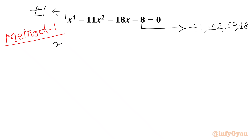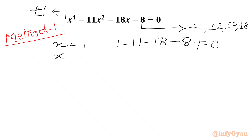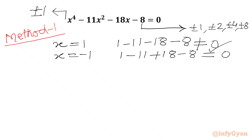In this series, if I plug in x = 1, will it satisfy our quartic equation? Let's check: 1 - 11 - 18 - 8. No, it won't. Let's plug in x = -1. So I will write here 1 - 11 + 18 - 8. This time it is satisfying our equation: 19 - 19 = 0. So we can conclude x = -1 is our base solution.